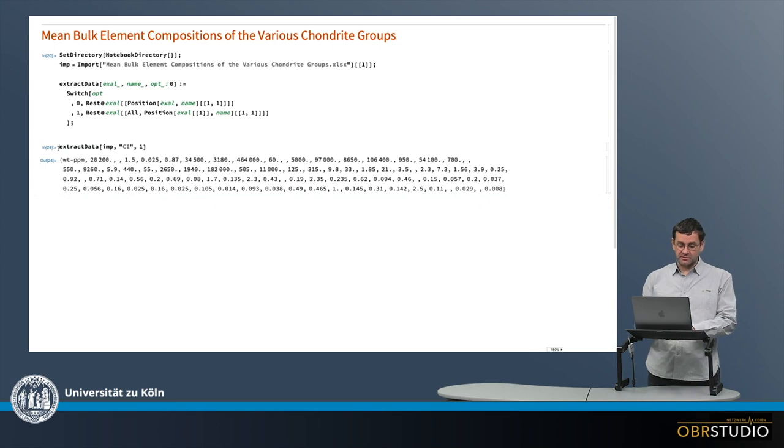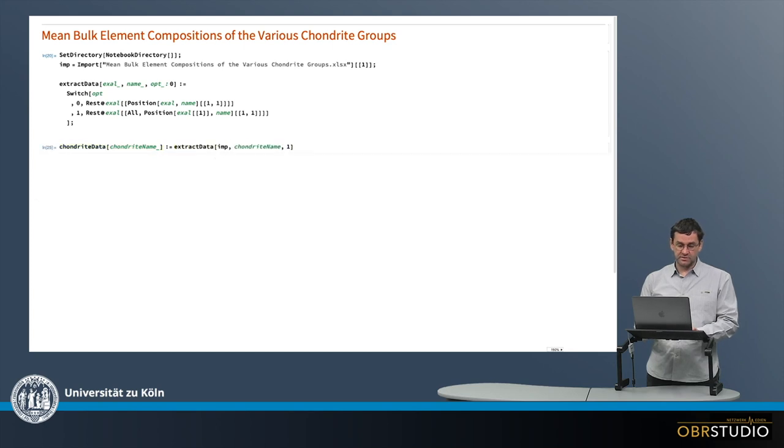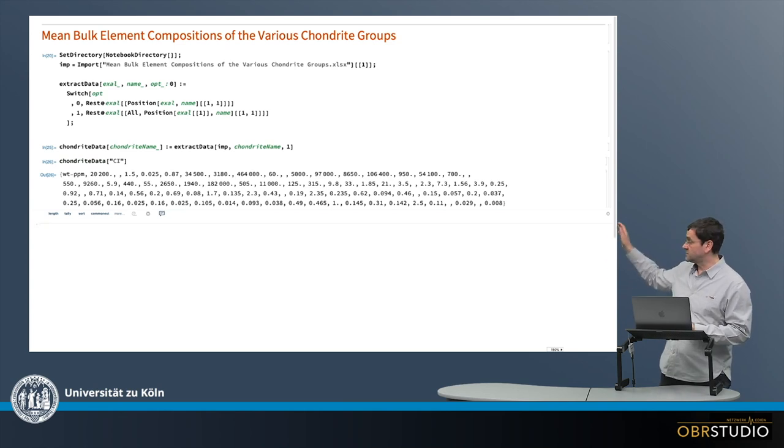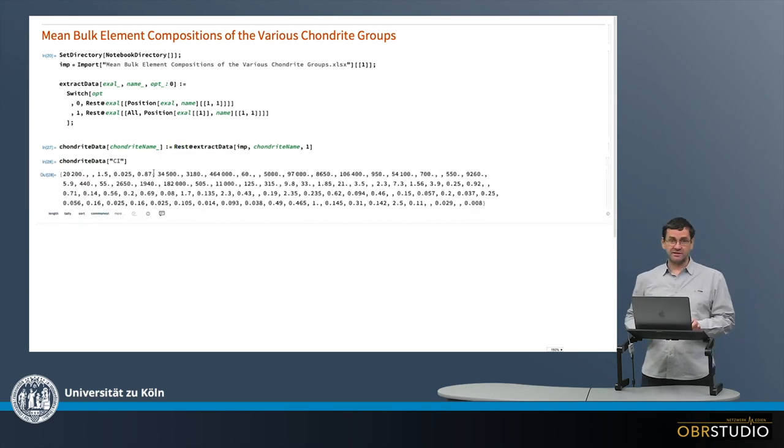And I can also make a command from this, in which I get the chondrite data. And I pass into this command the chondrite name. And so this is how I make this command here. And then the chondrite name will be put in here. So I can execute this command and then use this command here to, for example, extract this data. And I have in the first, this weight ppm, which I can get rid of with this addition here. And now I have only the data here.